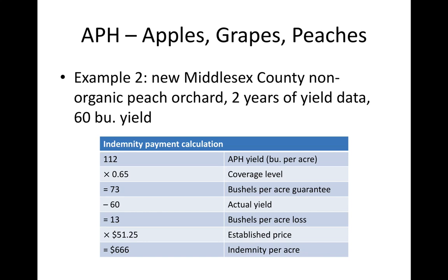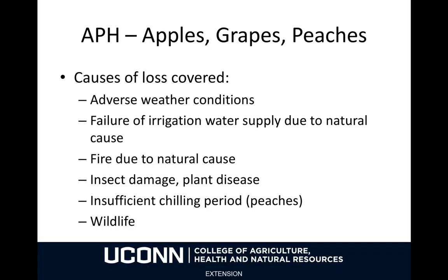Let's consider the same orchard but with an actual yield of 60 bushels per acre instead of zero. Now your loss is going to be 13 bushels per acre — that is the guaranteed yield minus the actual yield — and you're going to be paid out at the same established price. So your indemnity per acre is going to be $666. APH covers losses when caused by adverse weather conditions, failure of irrigation water supply due to natural causes, fire due to natural cause, insect damage or plant disease, and for peaches, an insufficient chilling period. You can also get an insurance payout if your crop is damaged due to wildlife.